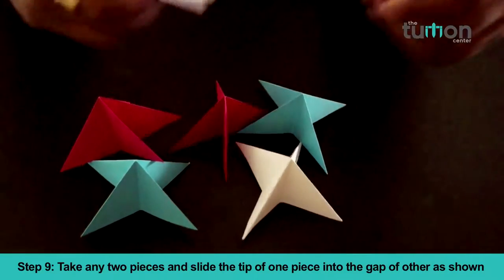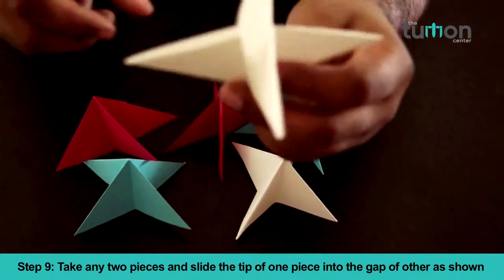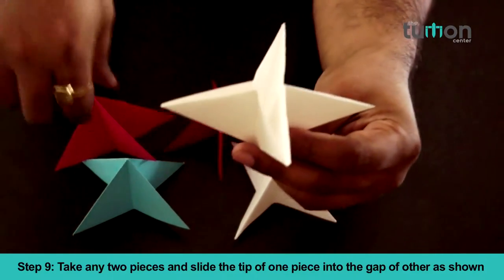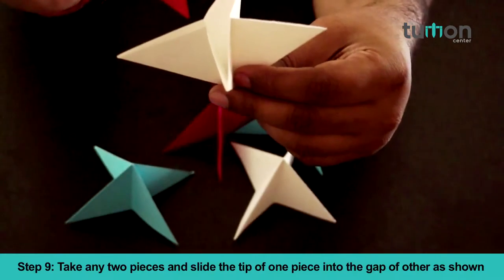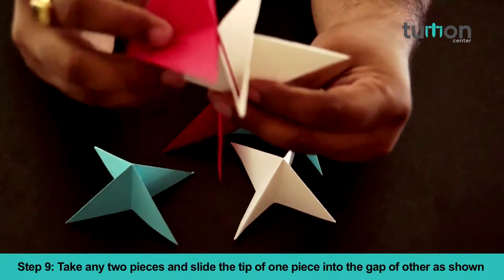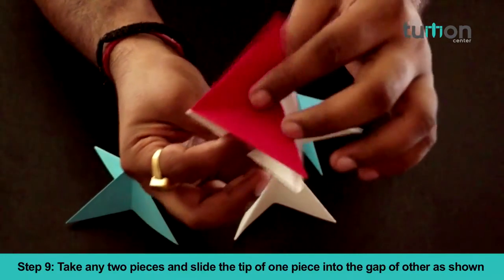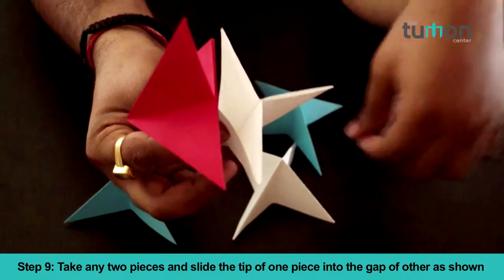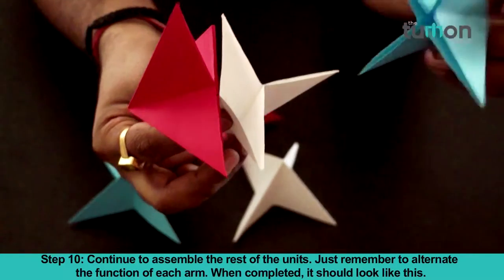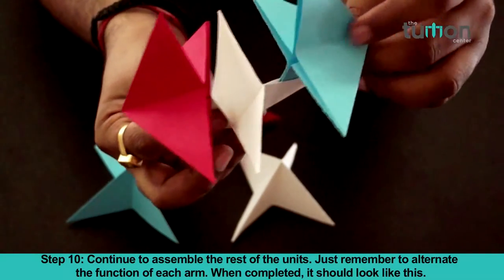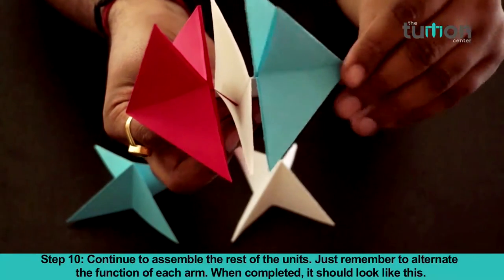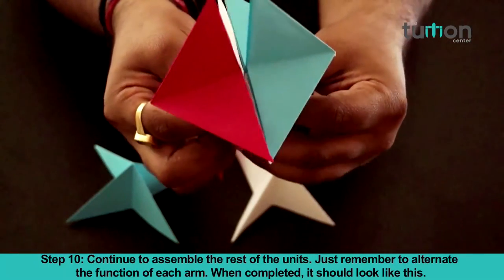Take any two pieces and slide the tip of one piece into the gap of the other as shown. Continue to assemble the rest of the units, just remember to alternate the function of each arm. When completed, it should look like this.